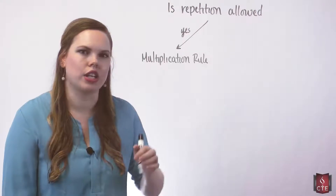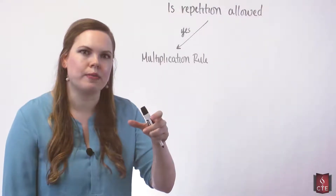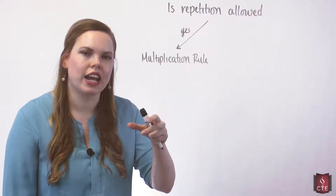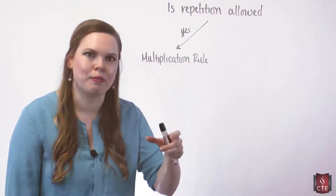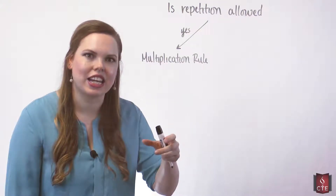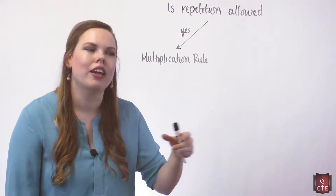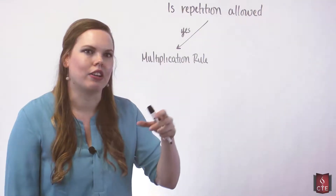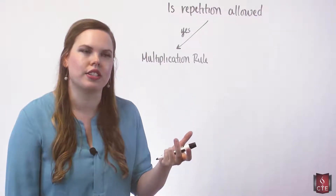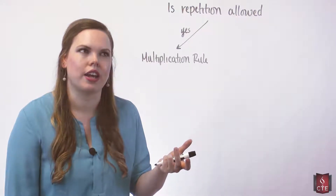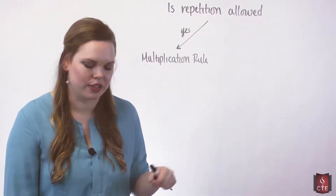If you do allow repetition, then you have to use the multiplication rule. The multiplication rule says that you take the number of times that the first event can happen, times the number of ways that the second event can happen, and so on in our sequence of events. That will tell us the number of ways that we can have our sequence of events.